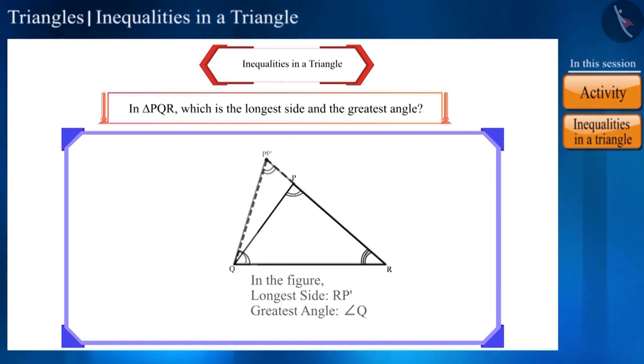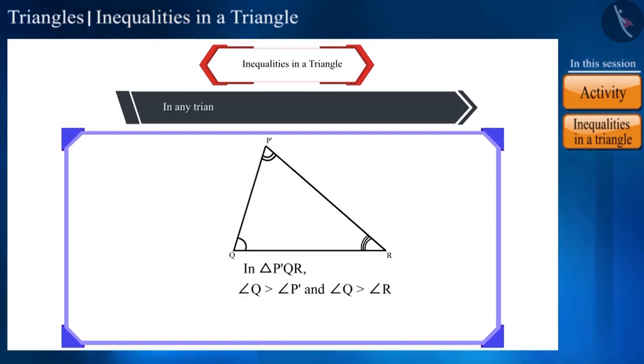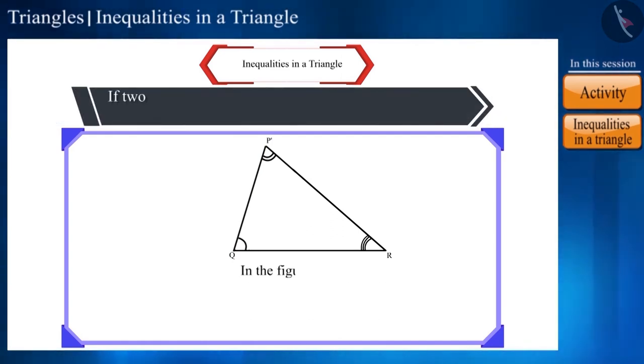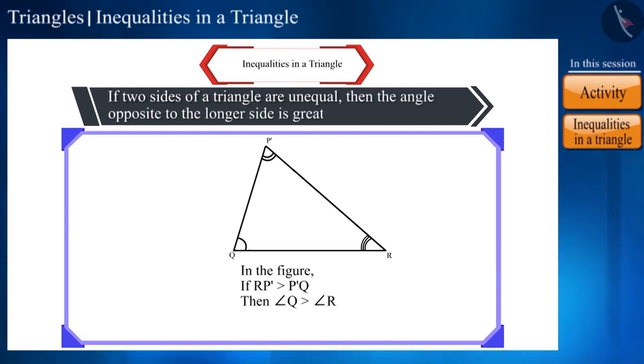There are two theorems based on this concept. In any triangle, the side opposite to the greatest angle is longer. If two sides of a triangle are unequal, then the angle opposite to the longer side is greater.